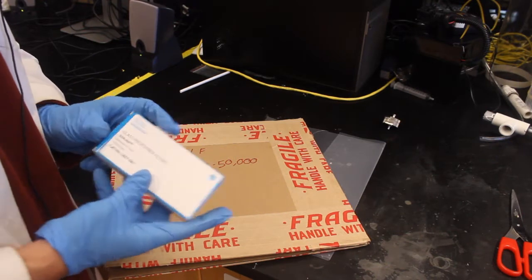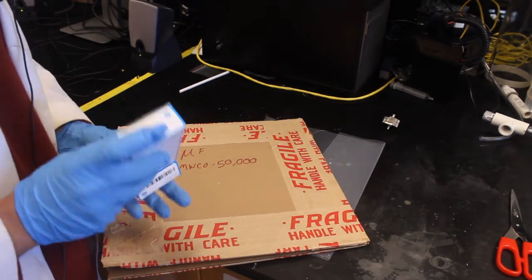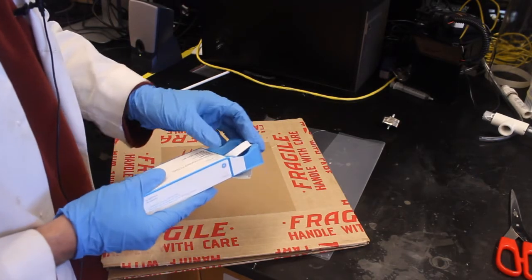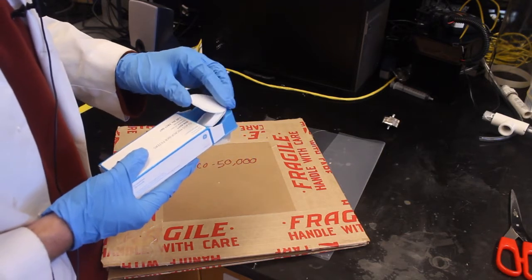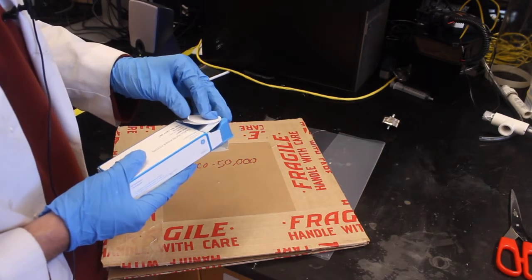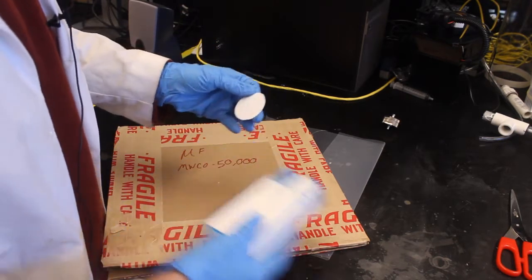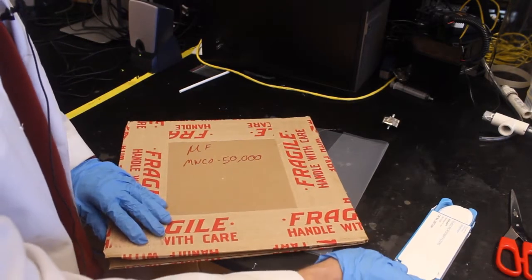First thing we're going to do is grab a Wattman glass microfiber filter. These filters are the size of the membranes that we need. Now these are going to be disposable so we don't have to worry about touching the edges as we're not going to be using these for other testing procedures. So we're going to grab one of those, but we're going to try to be careful to keep the shape. We're just going to set that aside.